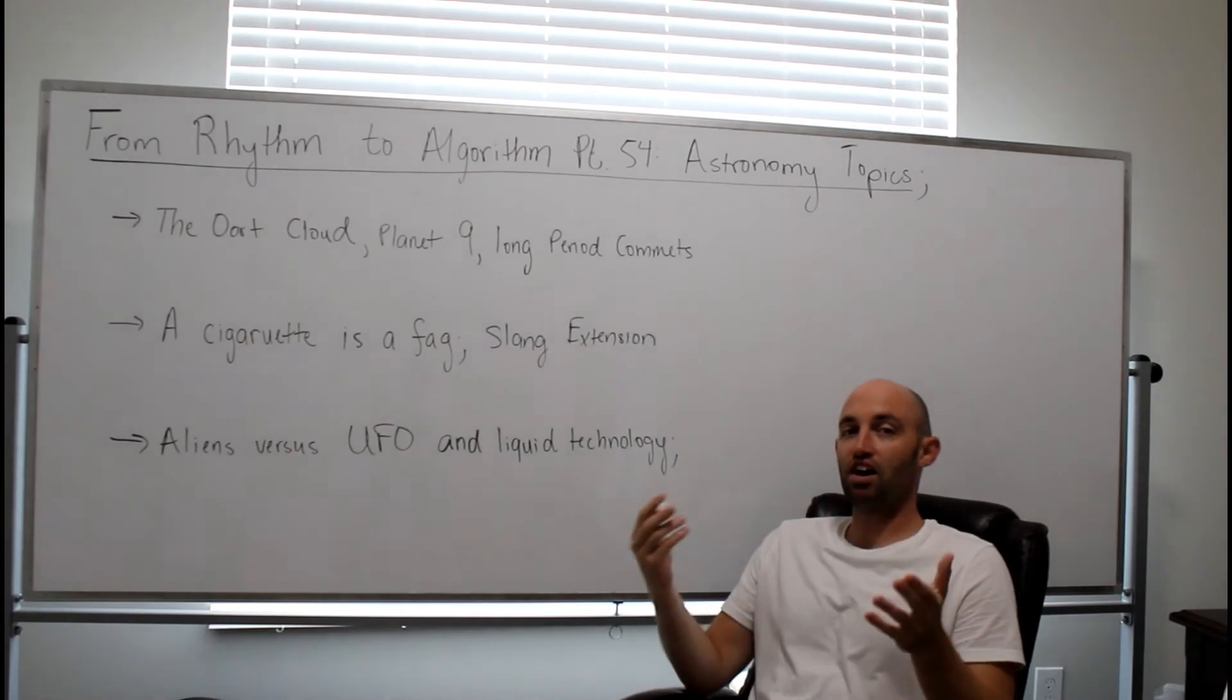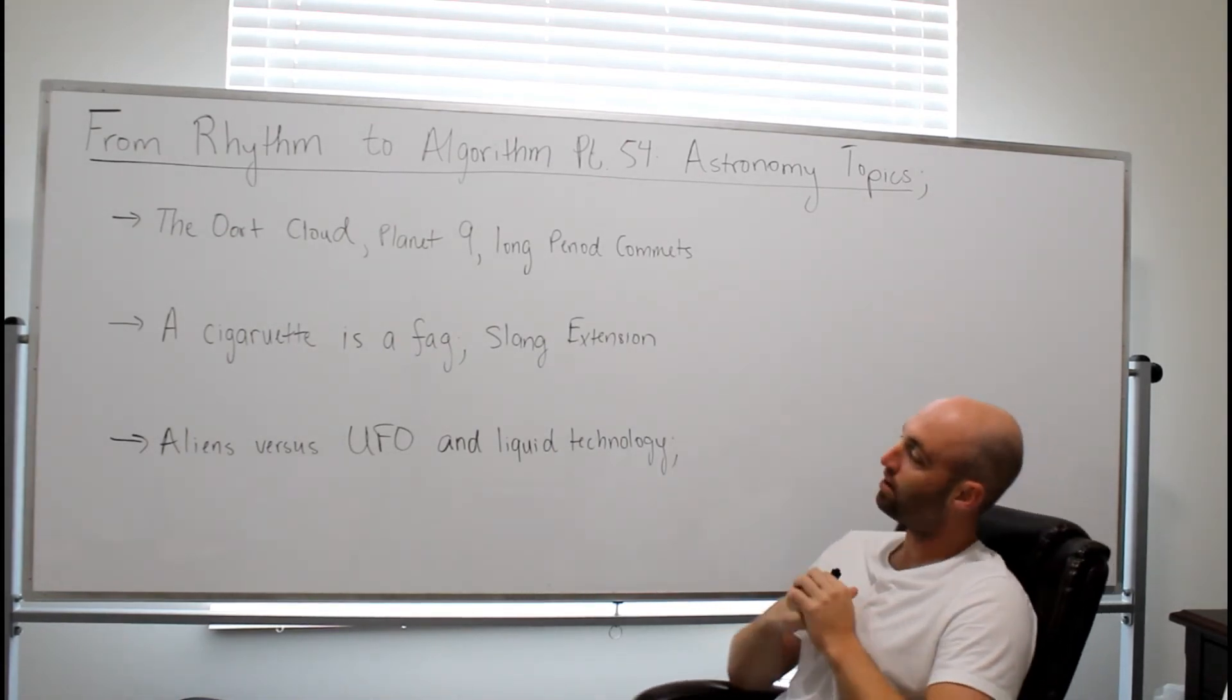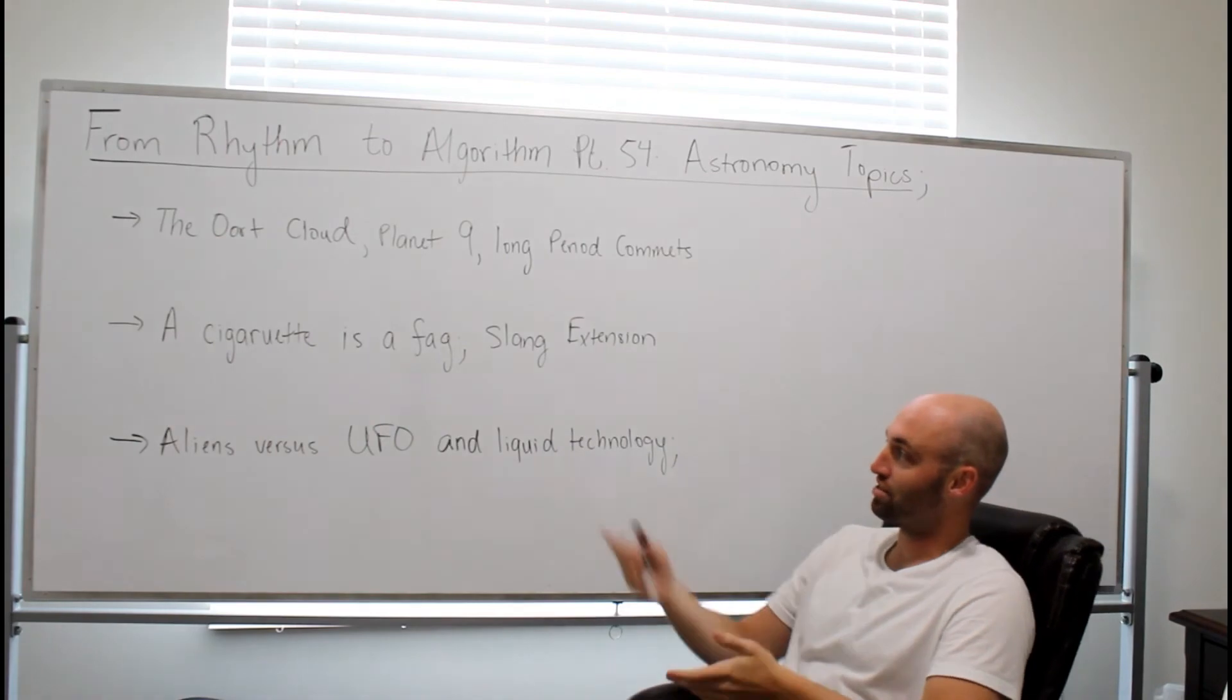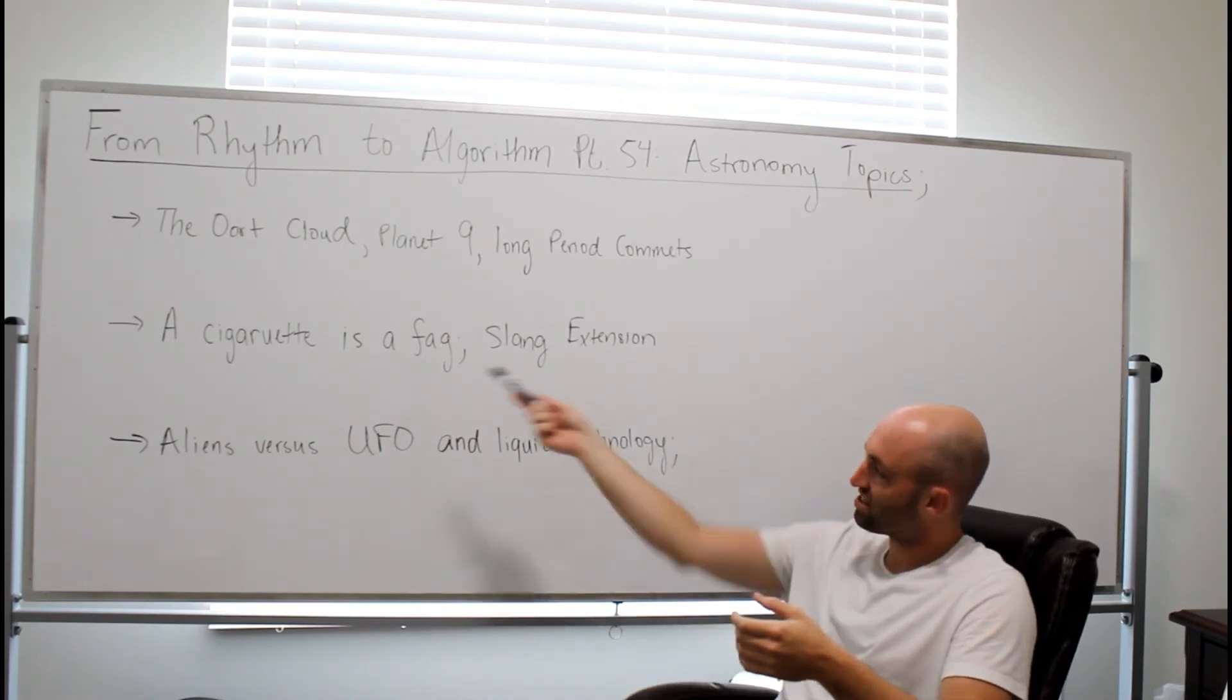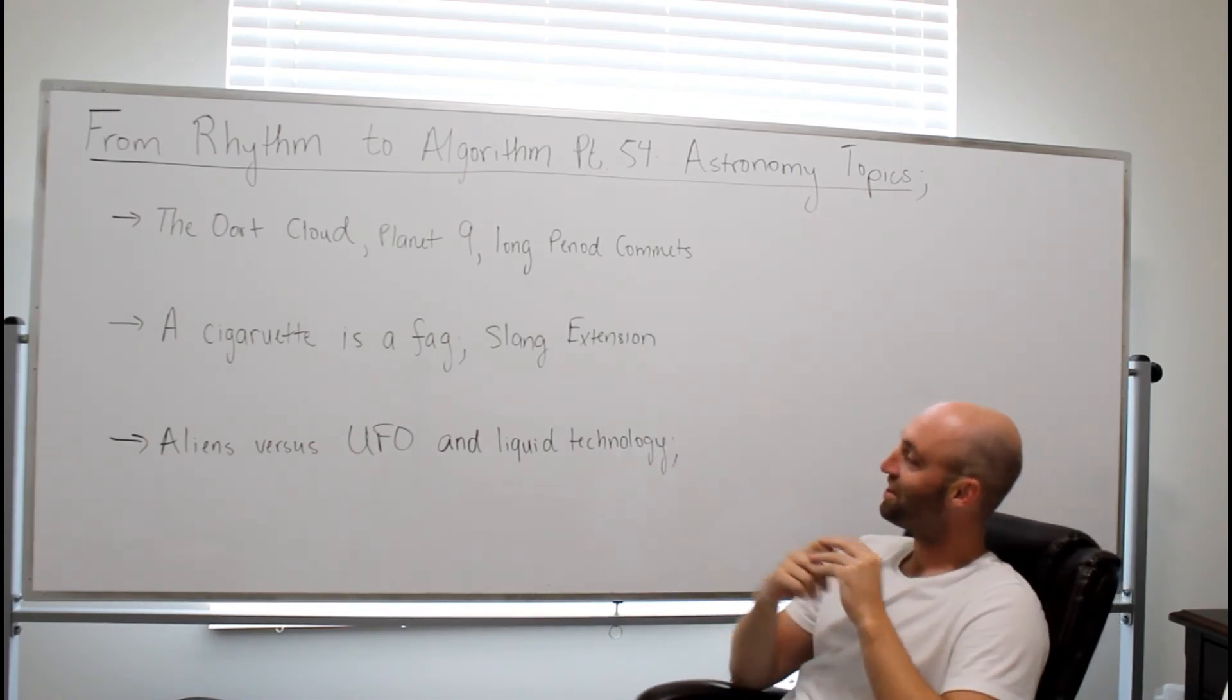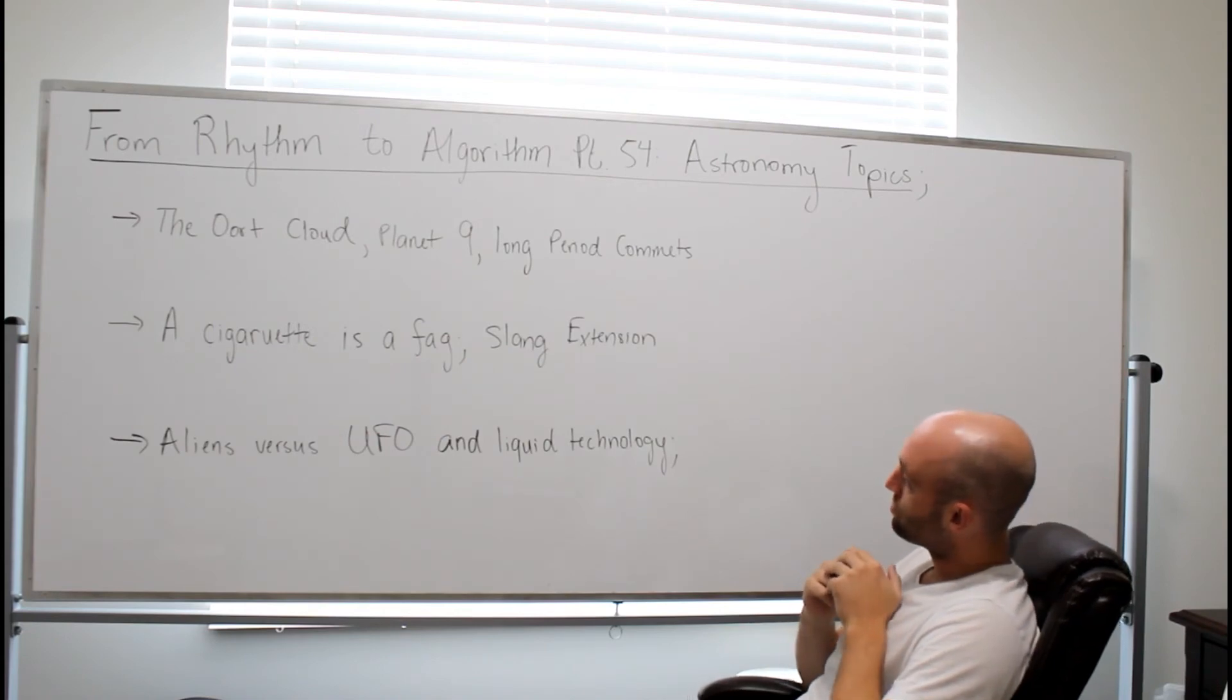Now let's talk about extending one of our proofs. A cigarette is a fag. Slang extension. A cigarette, the thing you smoke, is a fag. A cigarette is a derivative of fag. People call cigarettes in America cigarettes, they call them fags in England. So that's an extension to our slang proof.